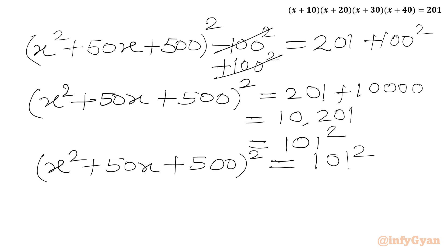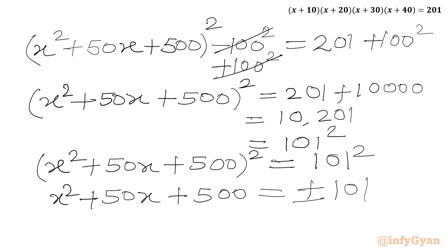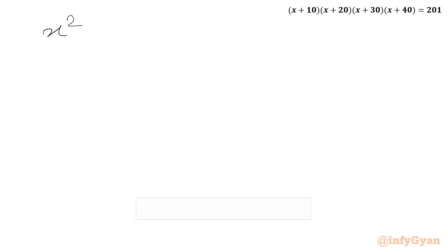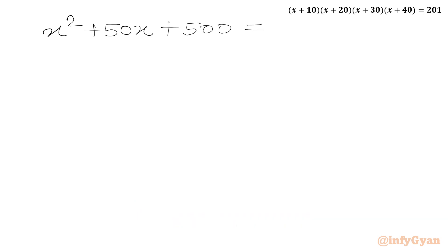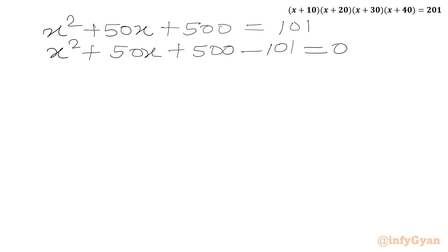So we can write: x squared plus 50x plus 500, whole squared, equals 101 whole squared. Taking the square root of both sides gives x squared plus 50x plus 500 equals plus or minus 101. This gives us two equations. Taking the positive case: x squared plus 50x plus 500 minus 101 equals 0, or x squared plus 50x plus 399 equals 0.